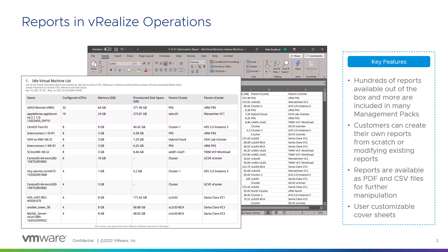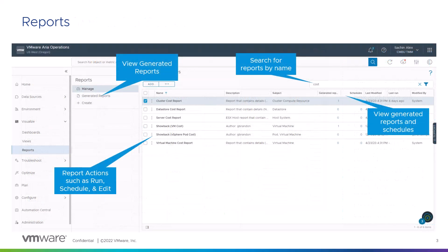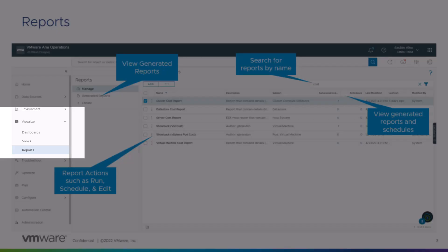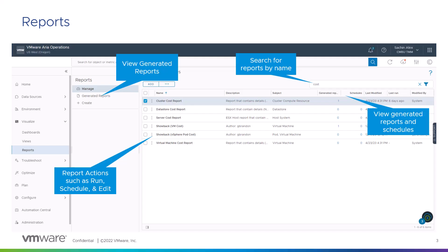Customers can create their own reports or use the out-of-the-box reports and more that are available through the management packs. When you log into VMware ARIA operations, the reports option is available under the Visualize tab. A list of all the reports available, custom as well as out-of-the-box reports, are displayed here.